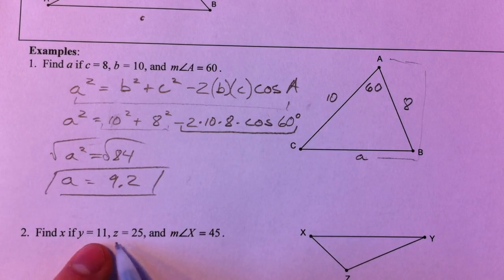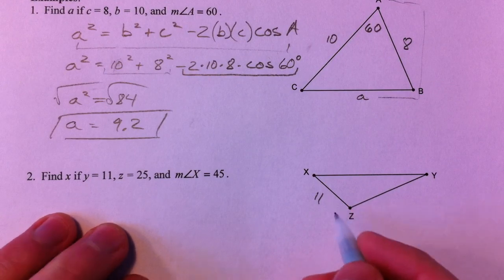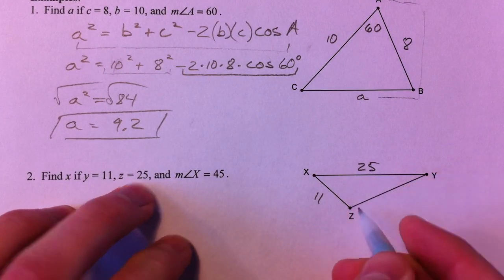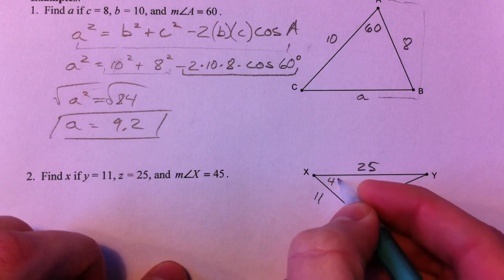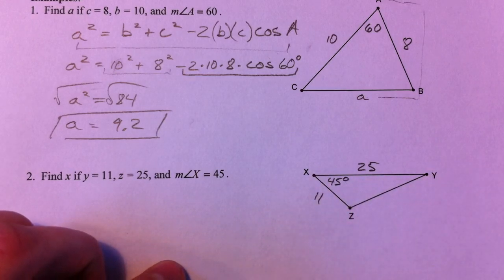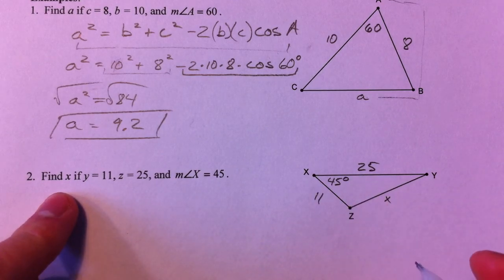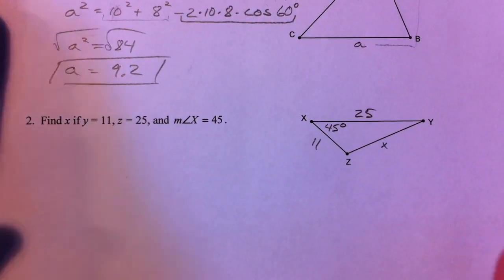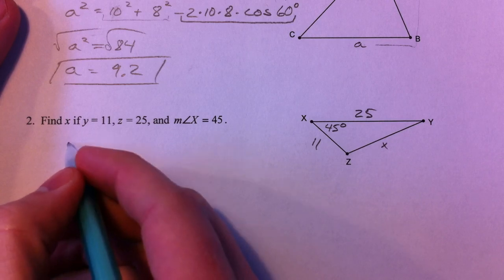So let's say we have Y is 11, so across from angle Y. Across from angle Z is 25, and we know angle X is 45. Why don't you guys try this one on your own? We're going to find x, which is across from angle X, in a very similar way. Hit pause, try it out, see if you got the answer right.